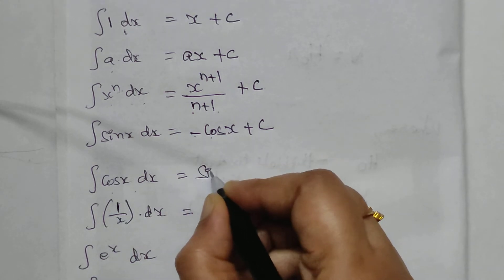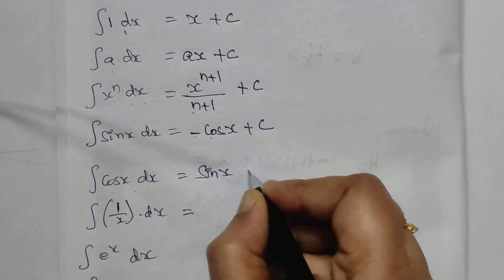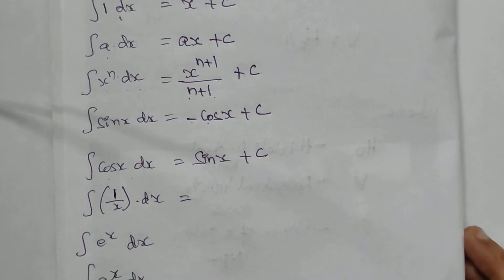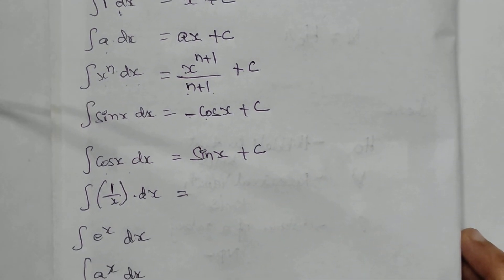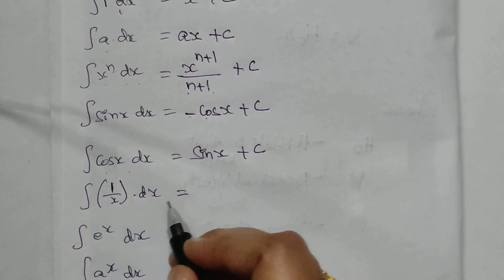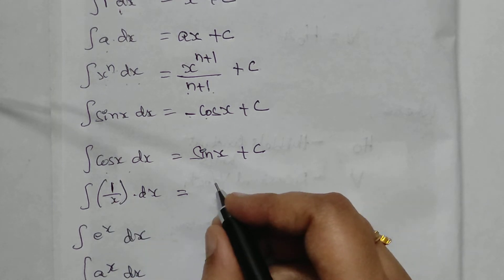Next, the integral of cos x — the integration of cos gives us sin x plus a constant C, which is the opposite of the previous formula.